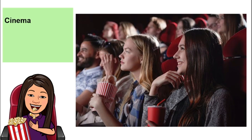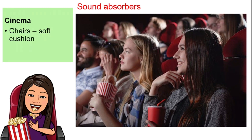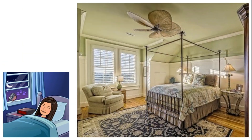One application of this concept is in cinemas. They use a lot of good sound absorbers — the chairs are layered with soft comfortable cushion, the walls are covered with soft layers, there are curtains, and the floor is carpeted. All of this makes the experience nice not only because it is comfortable, but because they are also good sound absorbers. You do not want to hear echoes in a movie — for example, if somebody says 'I love you' and you keep hearing 'I love you, I love you, I love you' — that is not a very pleasant experience.